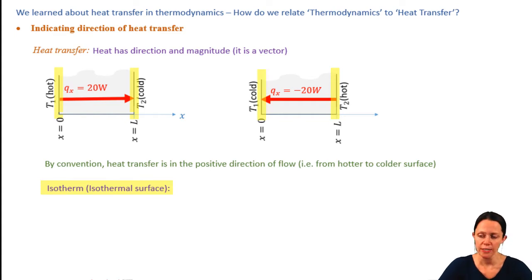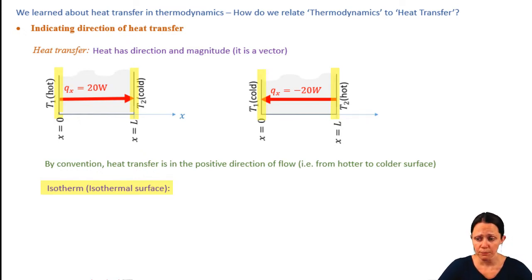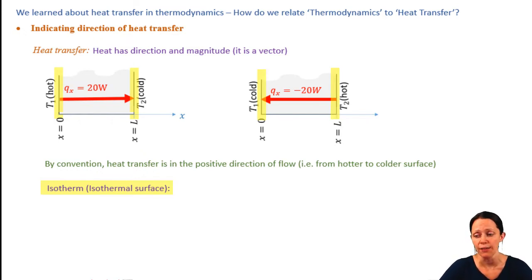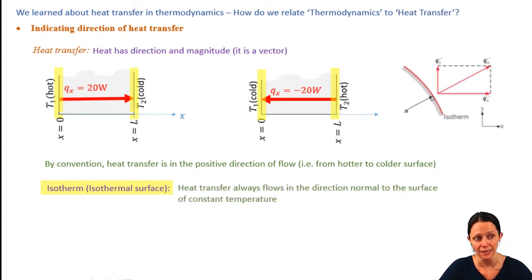Another very important thing to note is that those hot and cold surfaces are isothermal surfaces, or isotherms — each isotherm is at a uniform temperature. You'll also note that the heat transfer flows perpendicularly through or across those isothermal surfaces. The direction of heat flow will always be normal to that surface. An isothermal surface doesn't have to be a straight line; heat transfer at any location is simply normal to the isotherm.